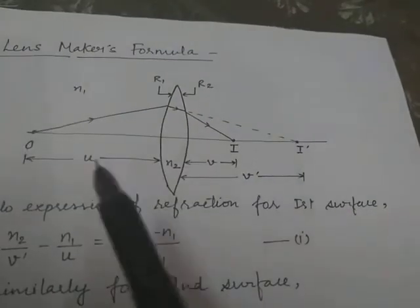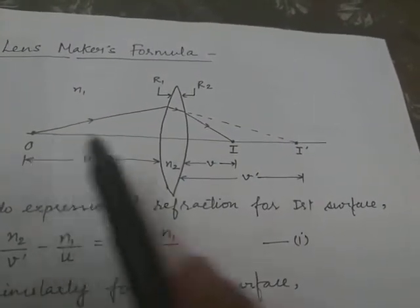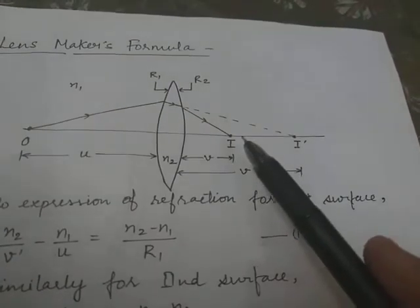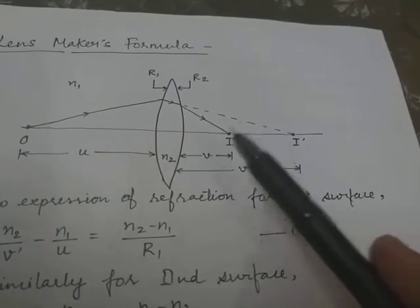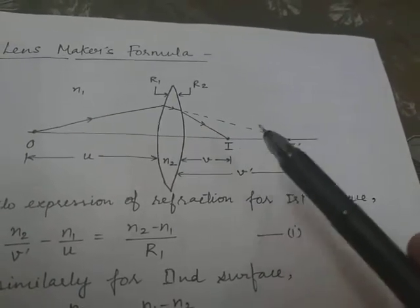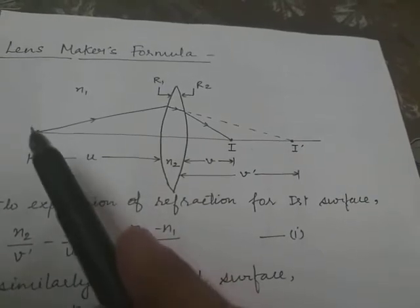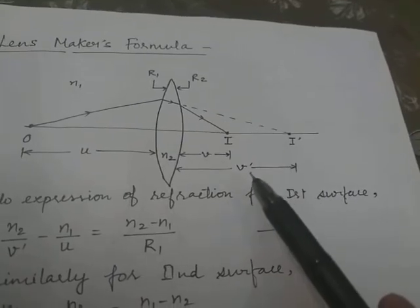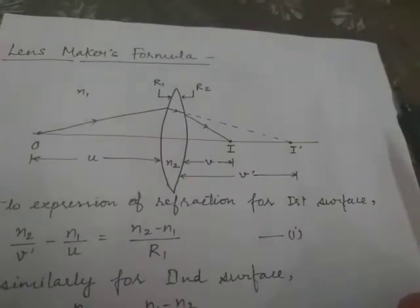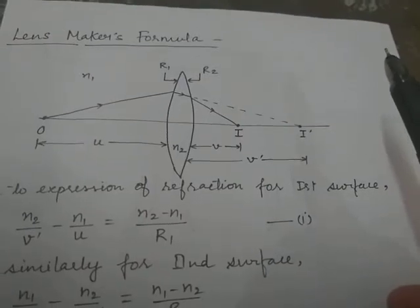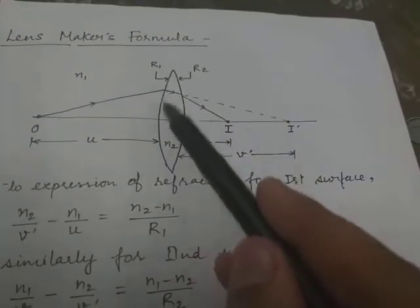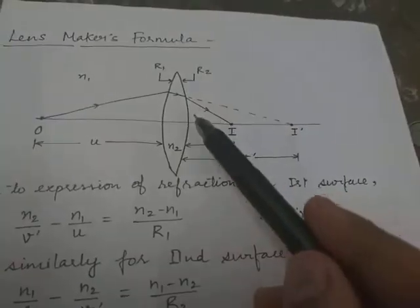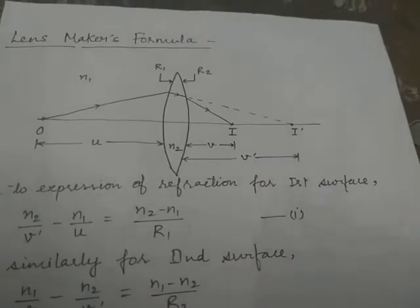Whenever O is taken as the object, I' is taken as the image. And when I' is taken as the object, I is considered as the image. So whenever U is the distance of the object, V' is the distance of the intermediate image. The image formed by the first surface acts as the object for the second surface — that is the main concept behind this diagram.